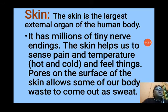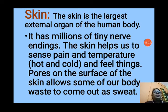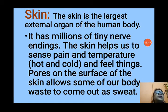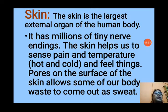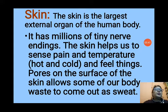The next organ is the skin. The skin is the largest external organ of the human body. It has millions of tiny nerve endings. The skin helps us to sense pain, temperature, hot and cold, and feel things. Pores on the surface of the skin allow body waste to come out as sweat. We can feel heat, cold, and pain with the help of our skin, and skin also helps remove waste from the body through sweat from the pores.